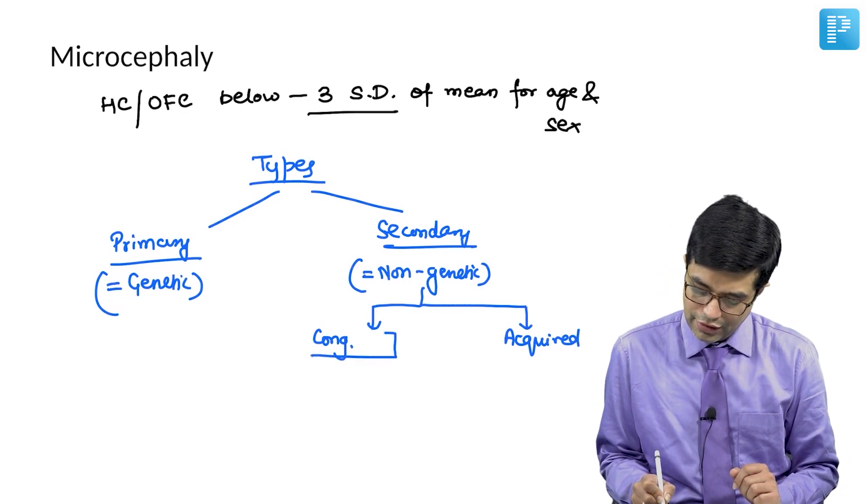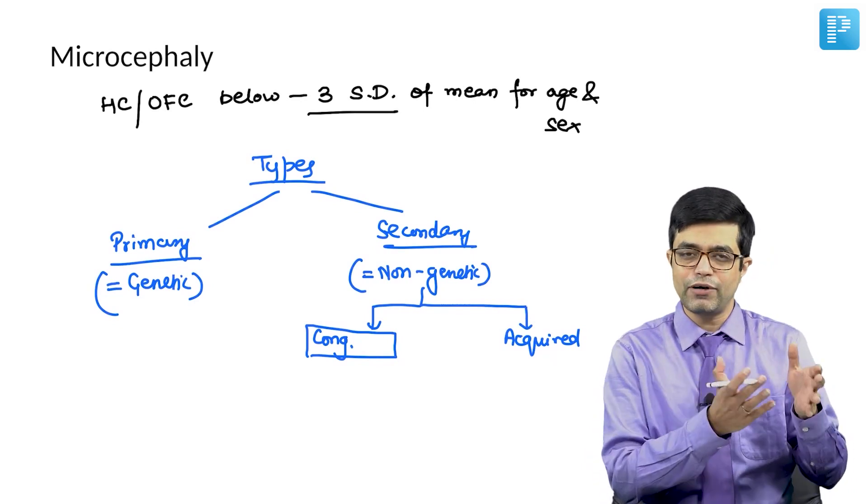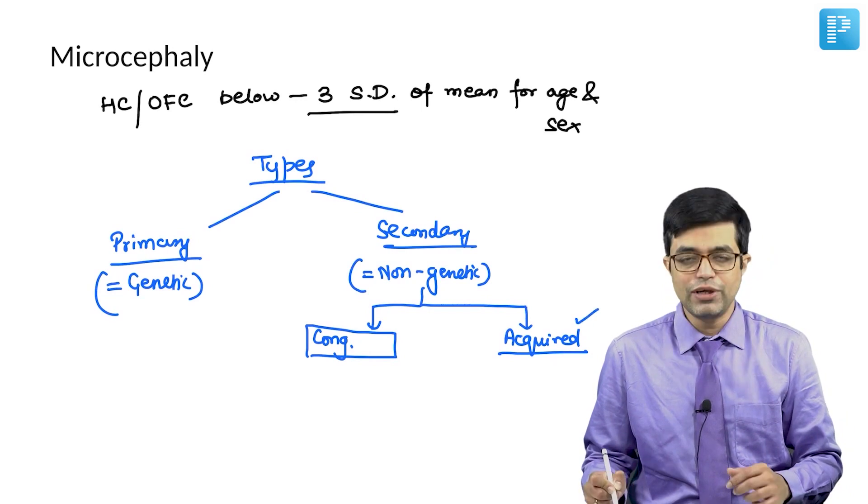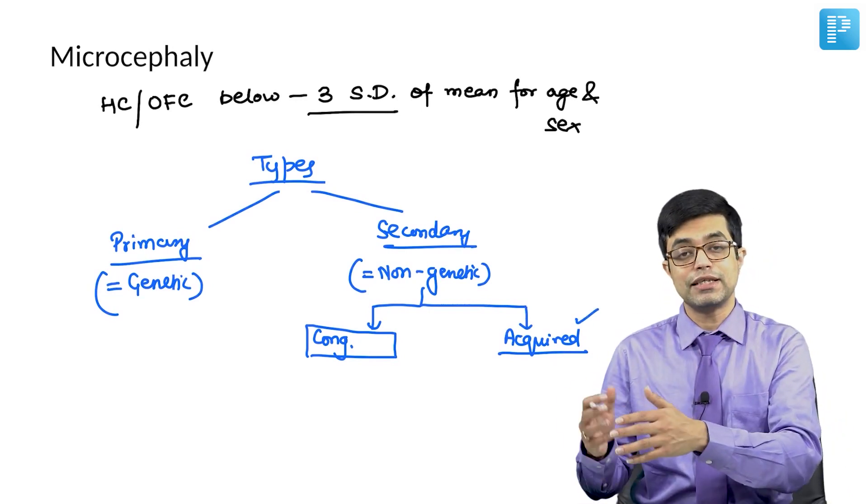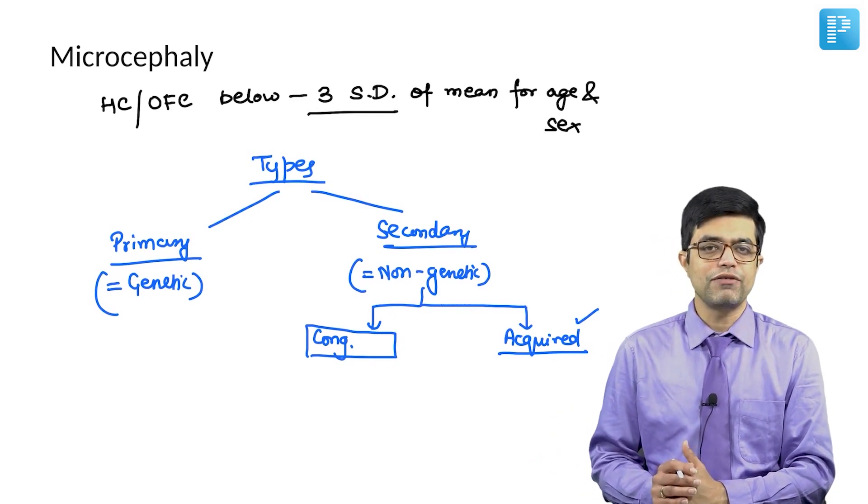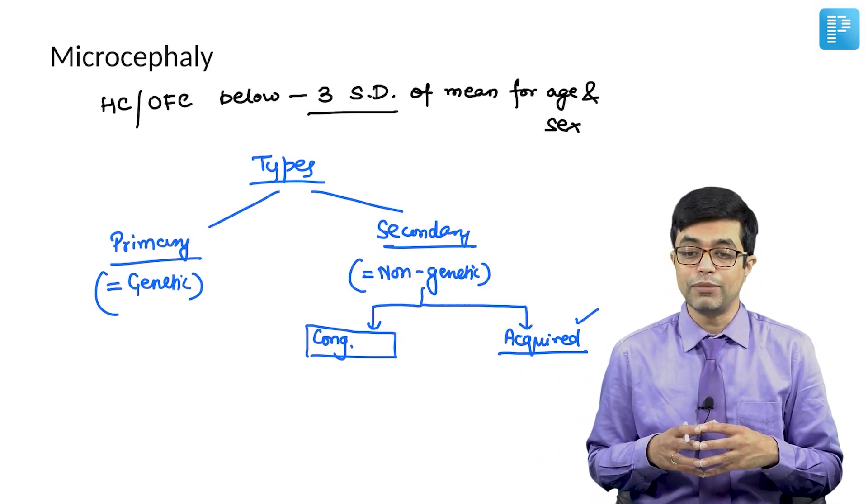Congenital is the one which will either be present at birth or will present within 3 to 4 weeks of birth, that is, they will present in the neonatal period. Whereas acquired microcephaly is the one which will usually present late in infancy and sometimes in childhood as well. A typical example of acquired microcephaly is Rett syndrome. This is the classification for microcephaly that you need to remember.